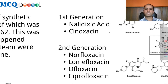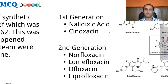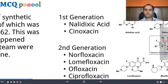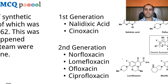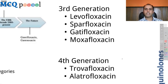In the first generation: nalidixic acid, oxolinic acid, and cynoxacin. In the second generation: norfloxacin, lomefloxacin, ofloxacin, and ciprofloxacin — ciprofloxacin and norfloxacin are very commonly used. Third generation includes levofloxacin, sparfloxacin, gatifloxacin, and moxifloxacin. The fourth generation constitutes trovafloxacin and gatifloxacin.